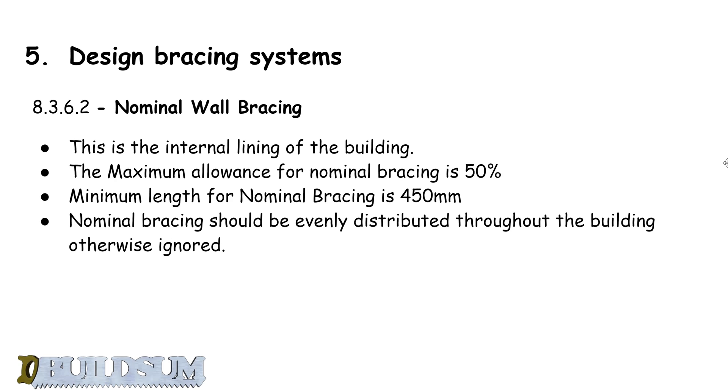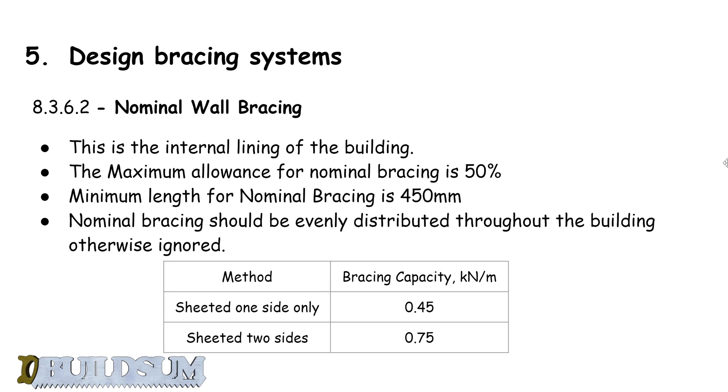The tables in the timber framing code say that the capacity of nominal wall bracing for single-sided walls is 0.45 kilonewtons per meter, and for walls sheeted on both sides it's 0.75 kilonewtons per meter.